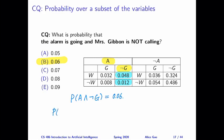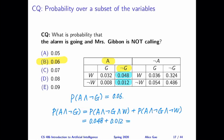Probability of A and not G is equal to the probability of A and not G and W plus the probability of A and not G and not W, 0.048 plus 0.012. Their sum is 0.06.